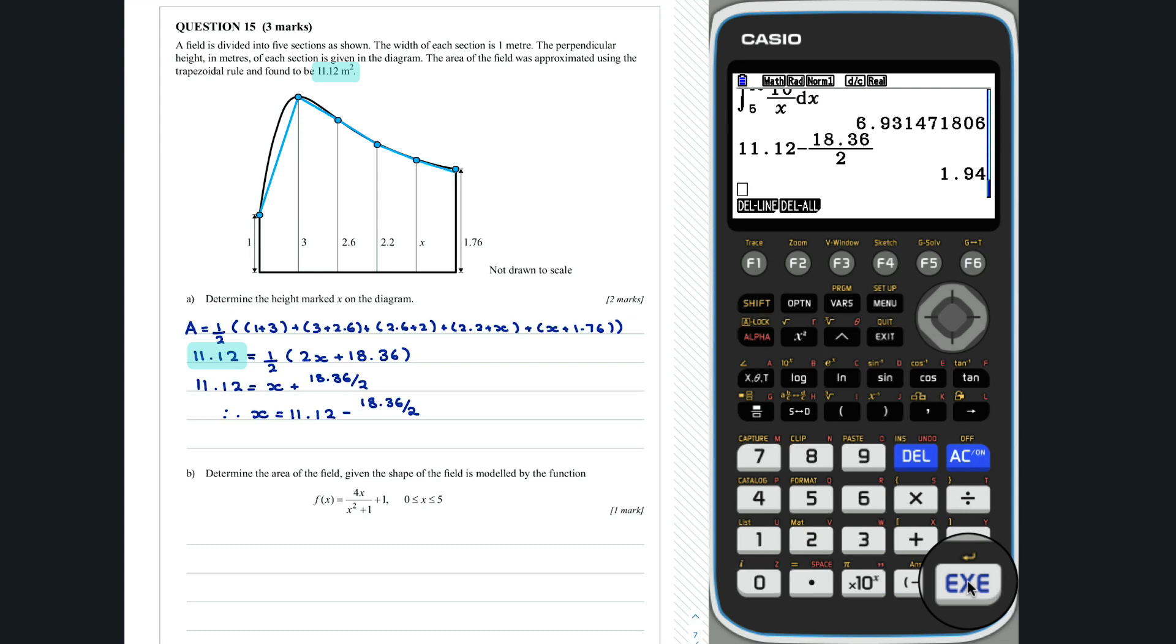Thus... If we do a quick sanity check, we would expect that x is between 1.76 and 2.2. We can see that 1.94 is in fact between those two values, so our answer makes sense. Thus, the value of x is 1.94.